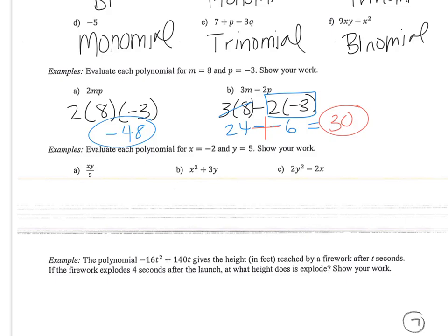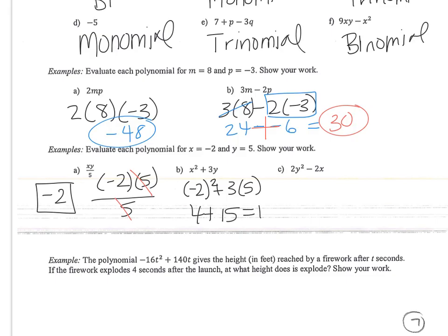And then I'm going to evaluate. So x is negative 2 and y is 5. Okay, you have 5 on the top and the bottom, and they're being multiplied. So you can cancel those out, so it's negative 2. Or you could do negative 2 times 5 is negative 10. Negative 10 divided by 5 is negative 2. So next one, I'm going to plug in parentheses. So negative 2 squared is 4. 4 plus 15 is 19.